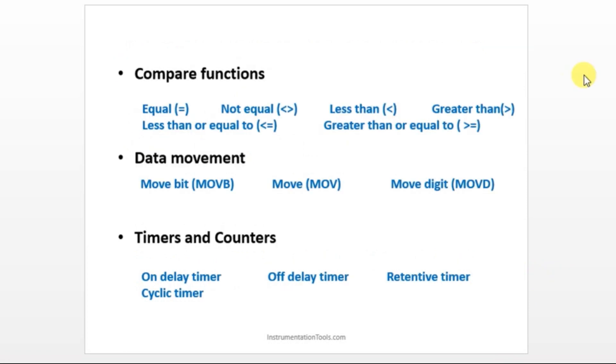Next we have comparator functions. Comparator function is used to compare two values, whether it is equal or not equal, greater than, less than. We can compare two values. Equal, not equal - we will be using this symbol. This symbol between two values means we are comparing these two values. For not equal, you have to use this symbol.